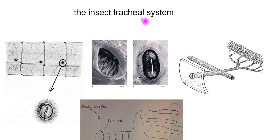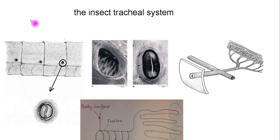I have a number of diagrams here that summarise the tracheal system. This system is really a network of tubes that run from the surface of the insect right into the tissues and cells of the insect. The insect has an exoskeleton made of chitin, and that exoskeleton is totally impermeable to gases. So in order to get air and gases into this tracheal system, it needs a series of small holes on the surface of the animal.